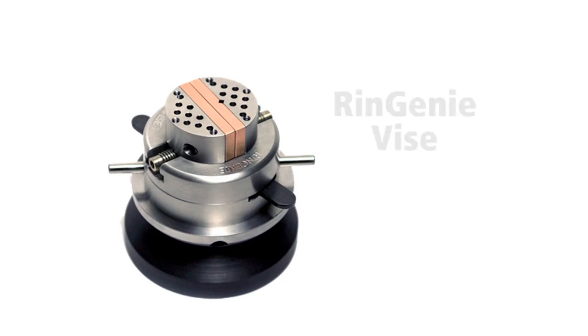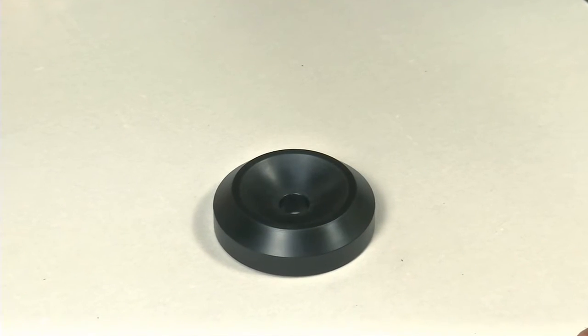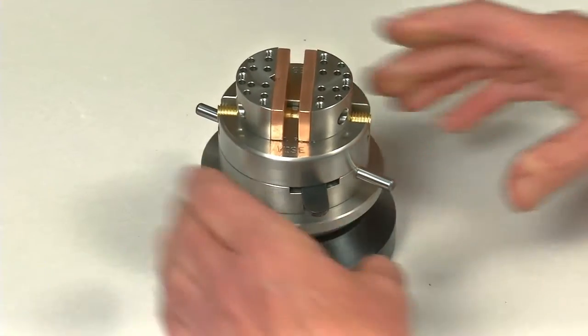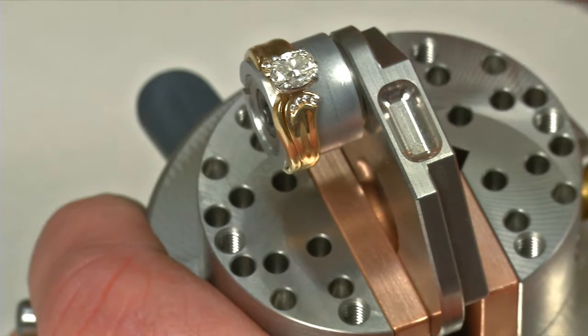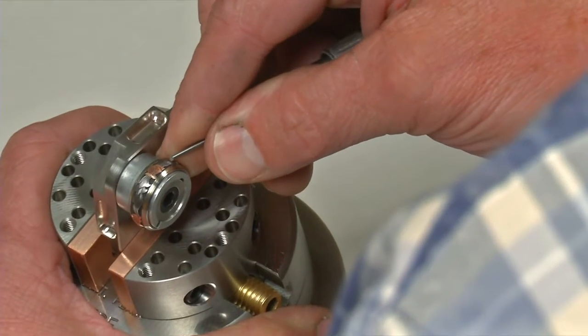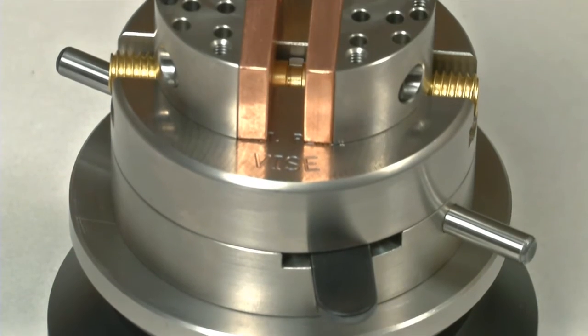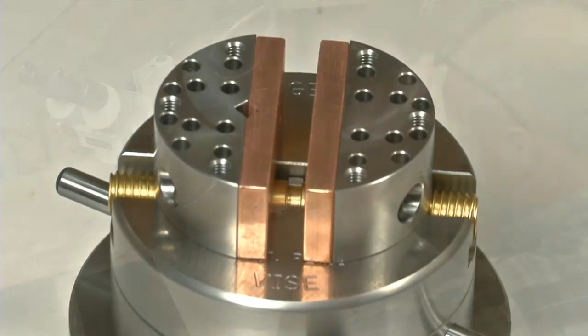Now, let's take a closer look at the Ringgenie vise. SDL Precision brings you the only micro ball that's also a positioning vise. It's ideal for diamond and jewel setting as well as engraving. The vise is made mainly of stainless steel for long life without any corrosion.